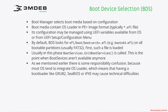By default, there is a default file that BDS looks for. It looks on the first partition for the file EFI/boot/boot followed by the architecture name — so for x86 64-bit architecture it would be bootx64.efi.